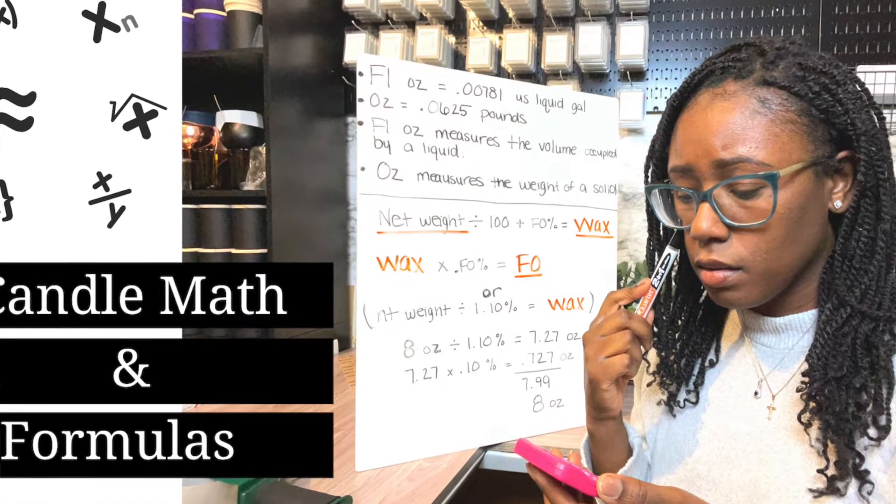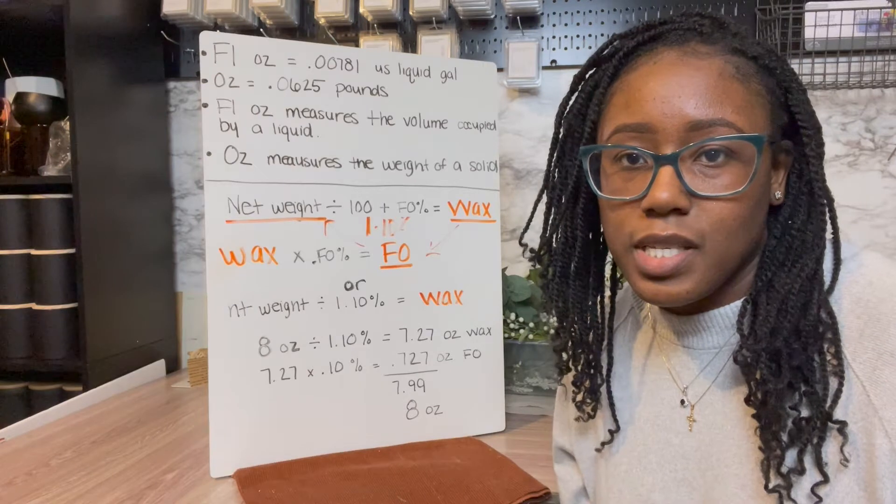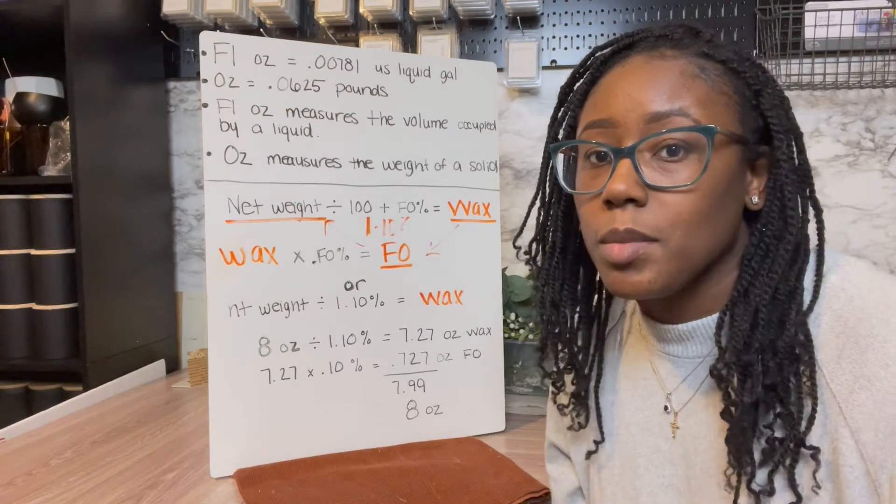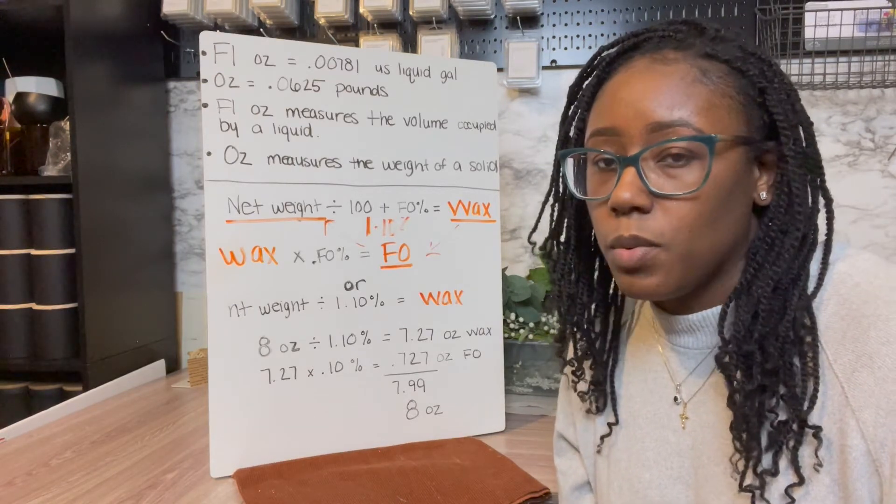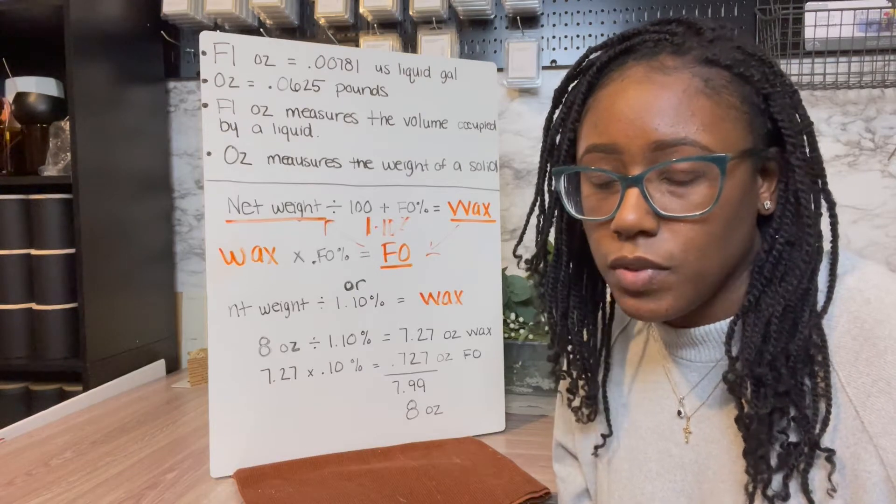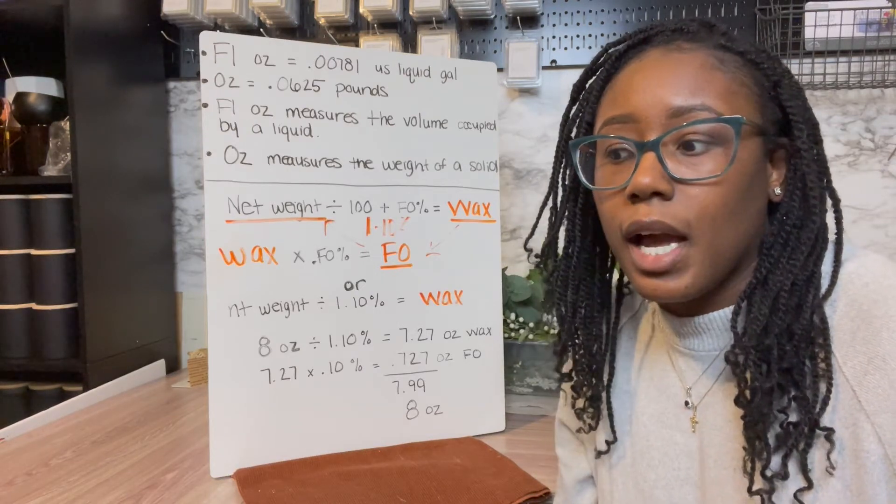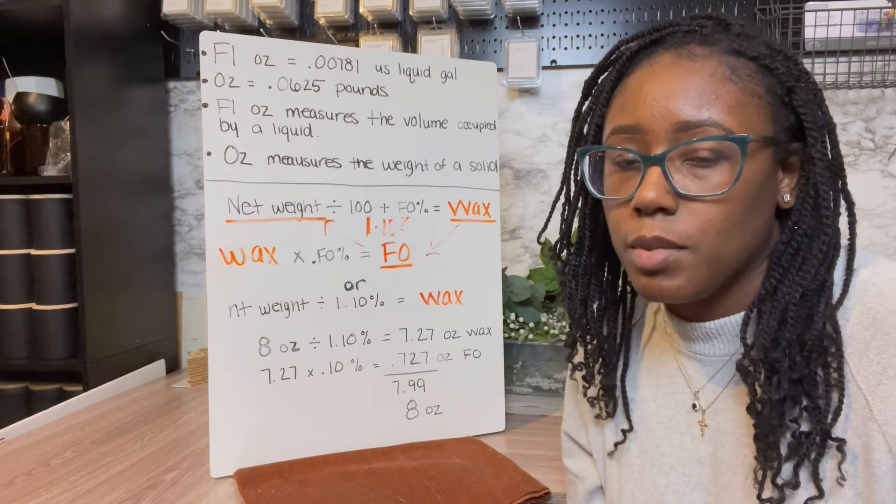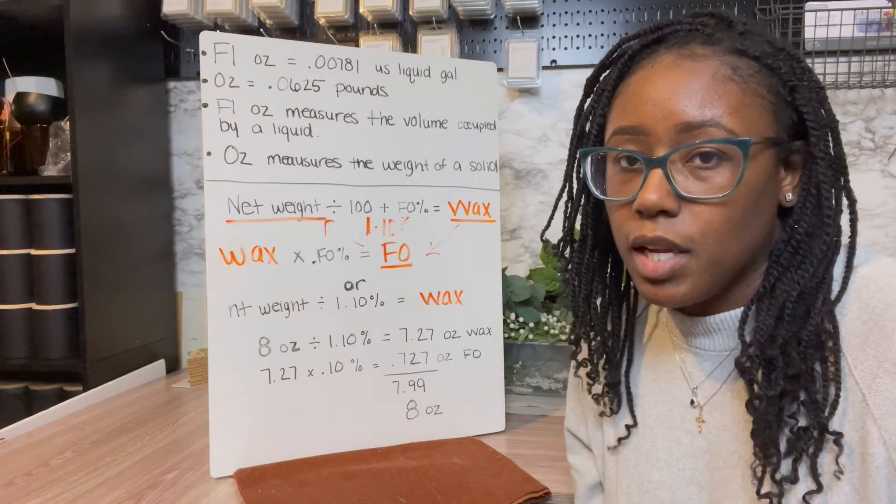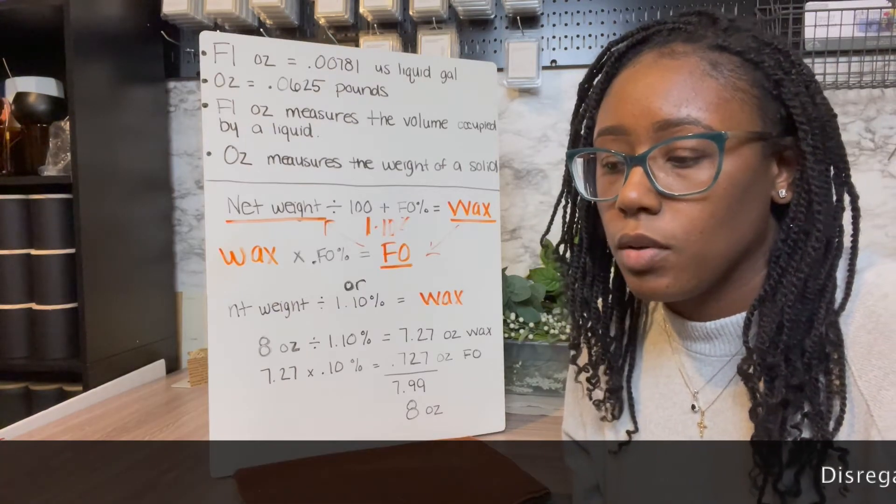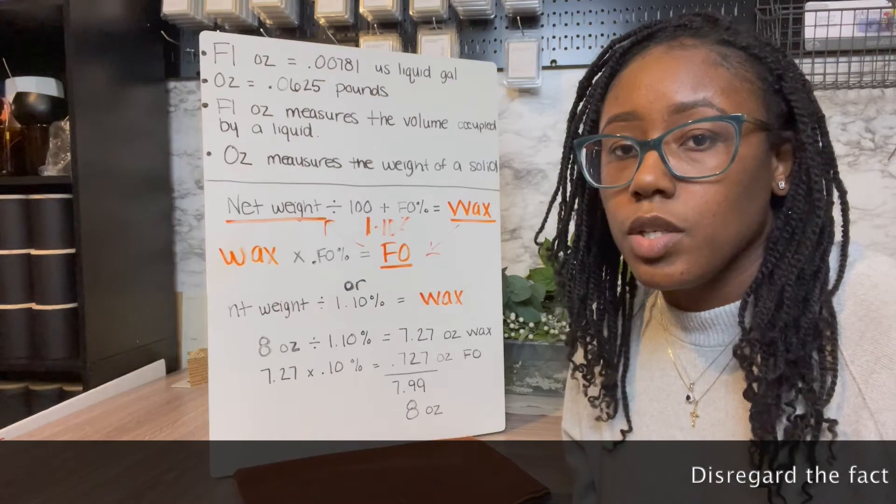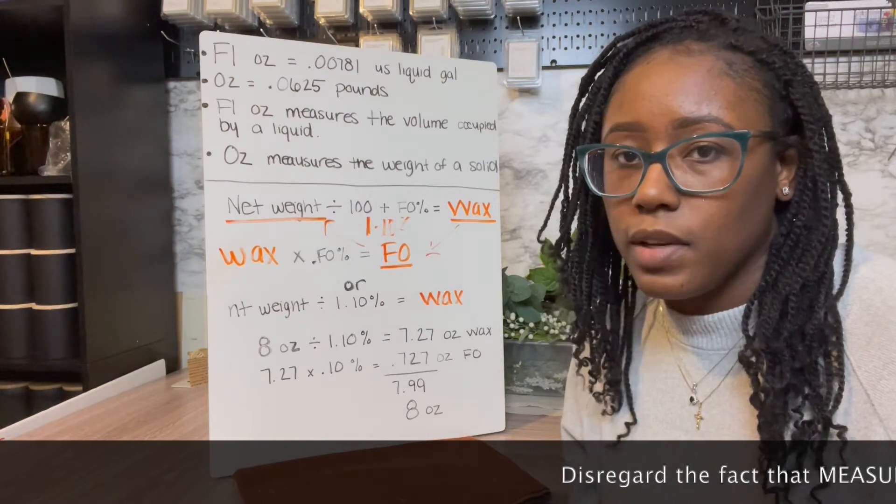Hey guys, welcome back to my channel. This is Sequoia with the Chase Street Renaissance and this video was actually requested by one of my subscribers. She wanted me to go through the math that's involved with candle making. How do you figure out how much wax and how much fragrance oil you're going to need per candle? Like let's say if you wanted to make one candle, how much wax and how much fragrance oil do you need for that one candle so that you don't have any waste left over?